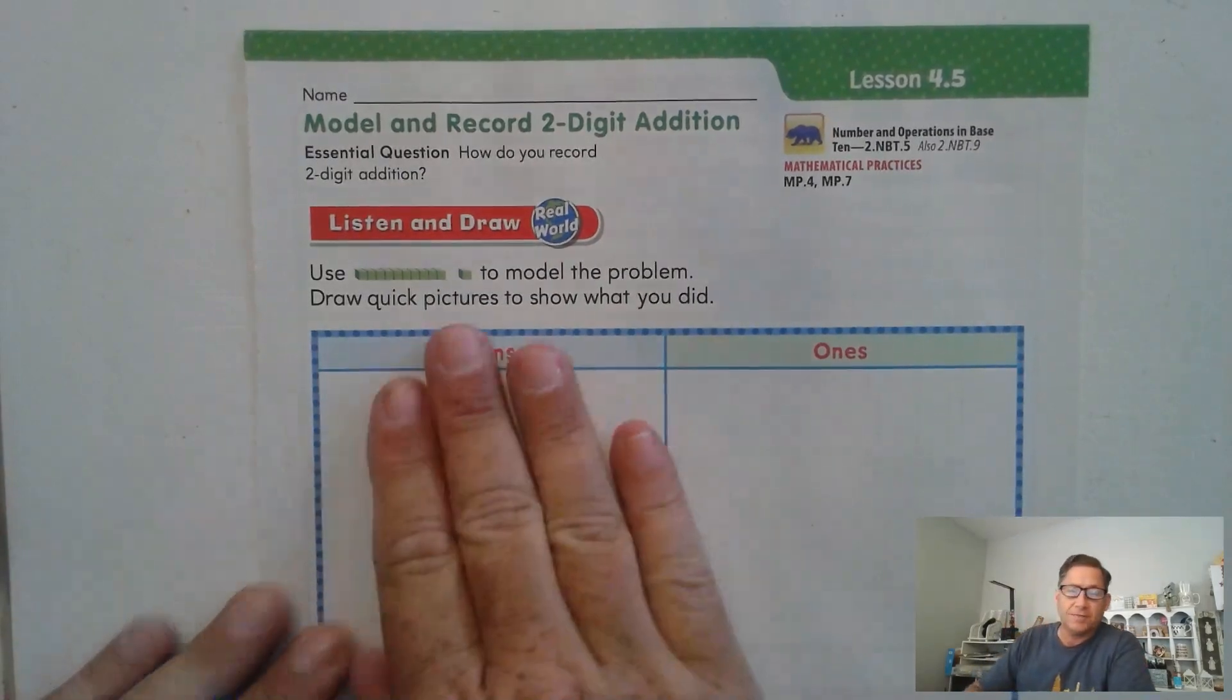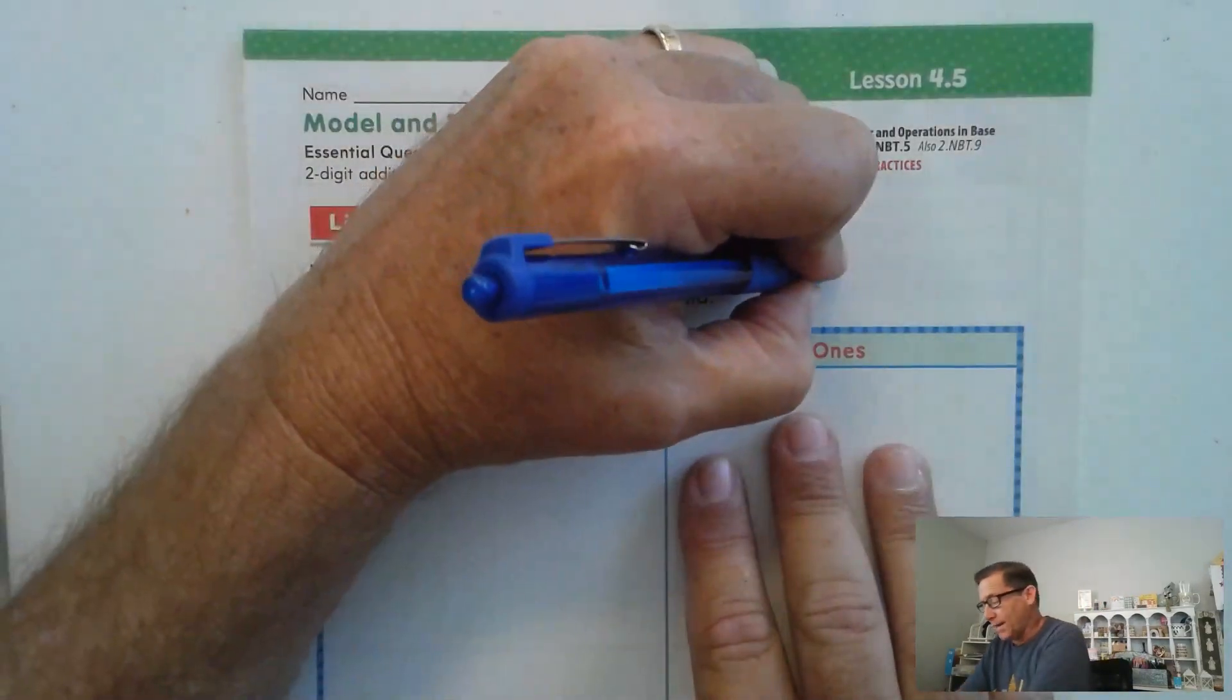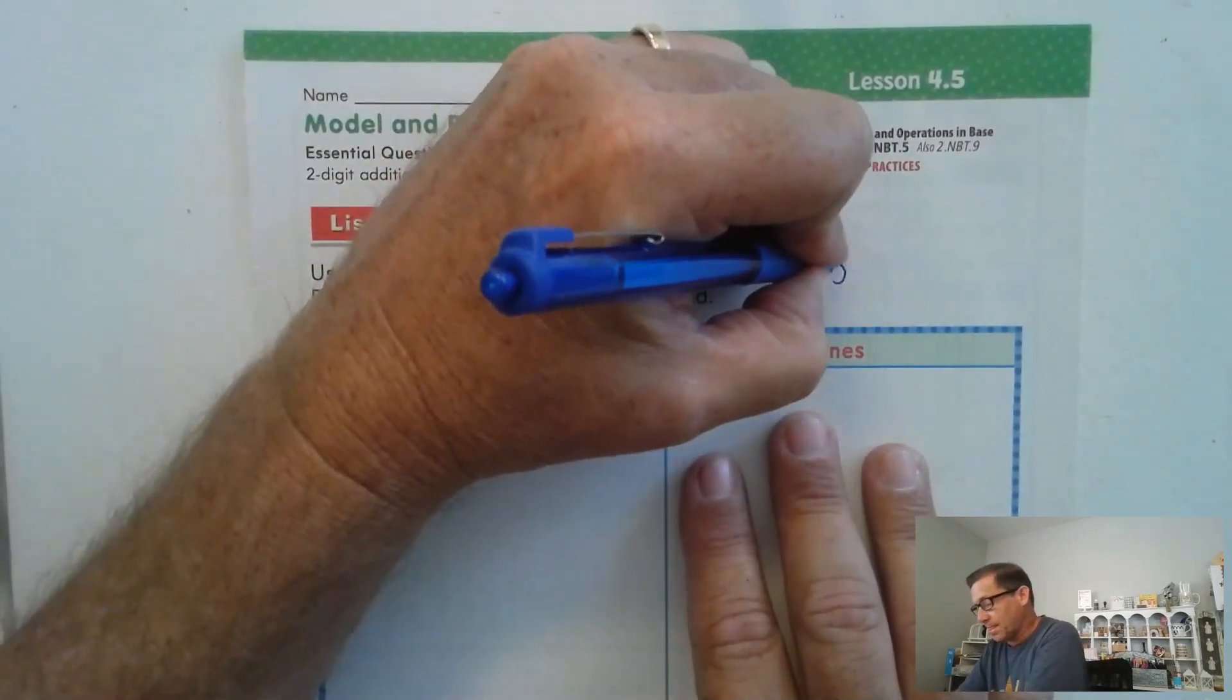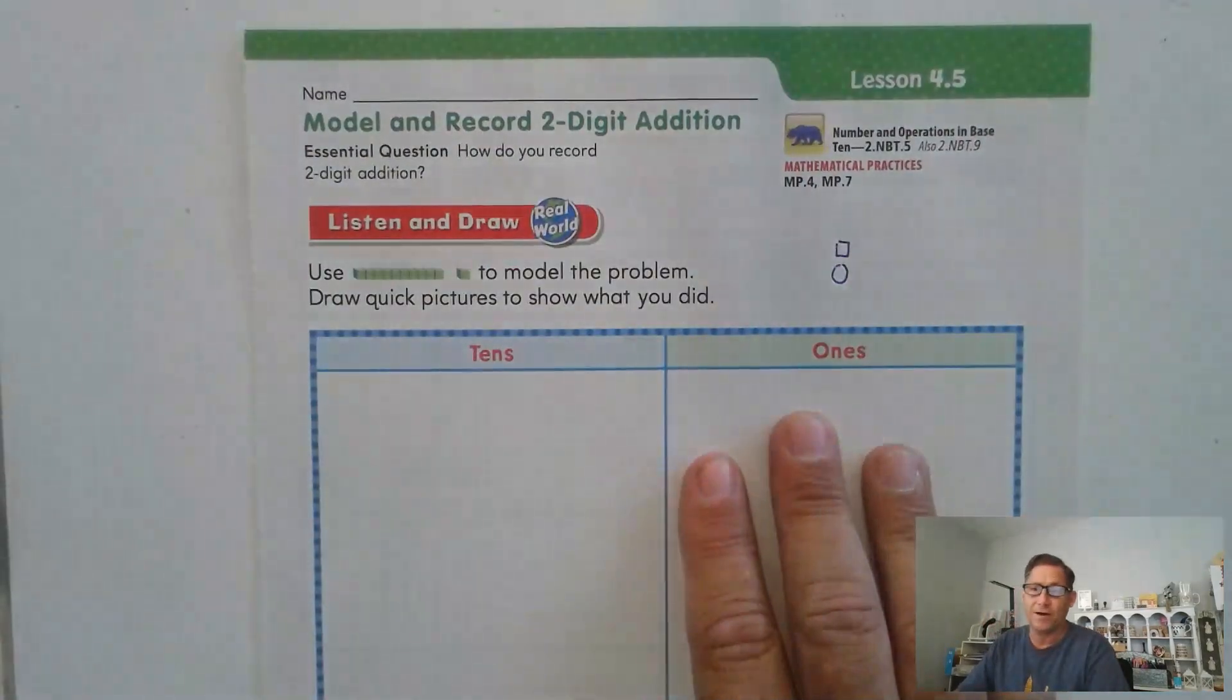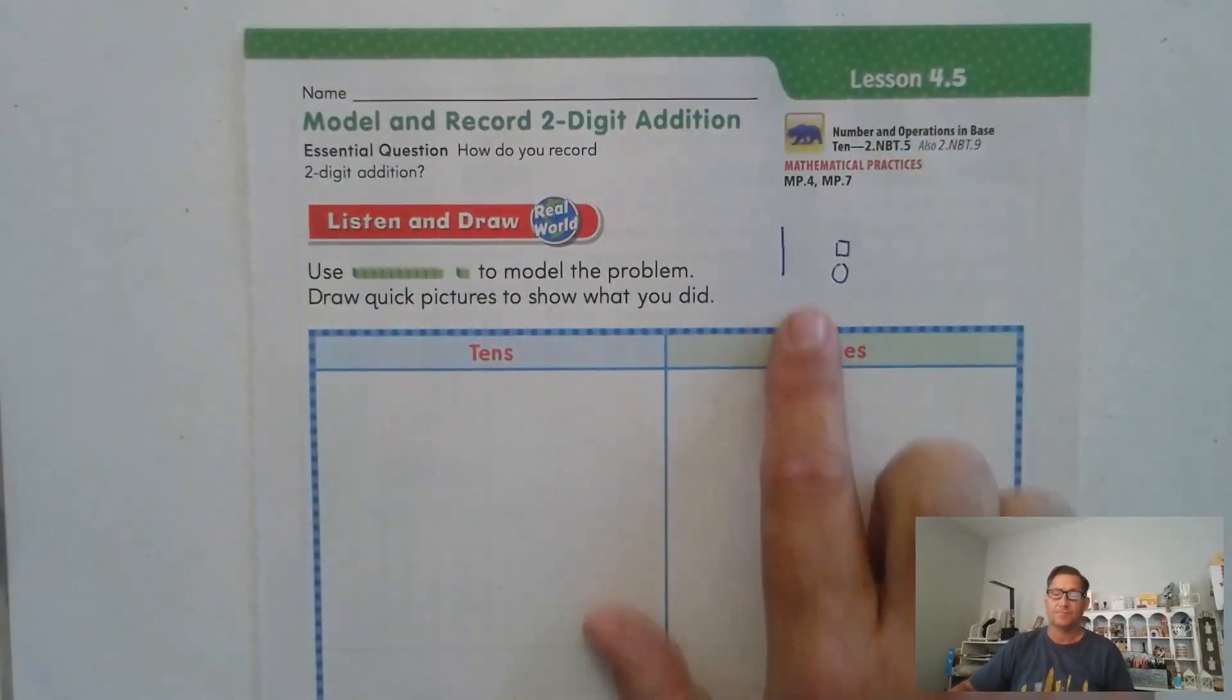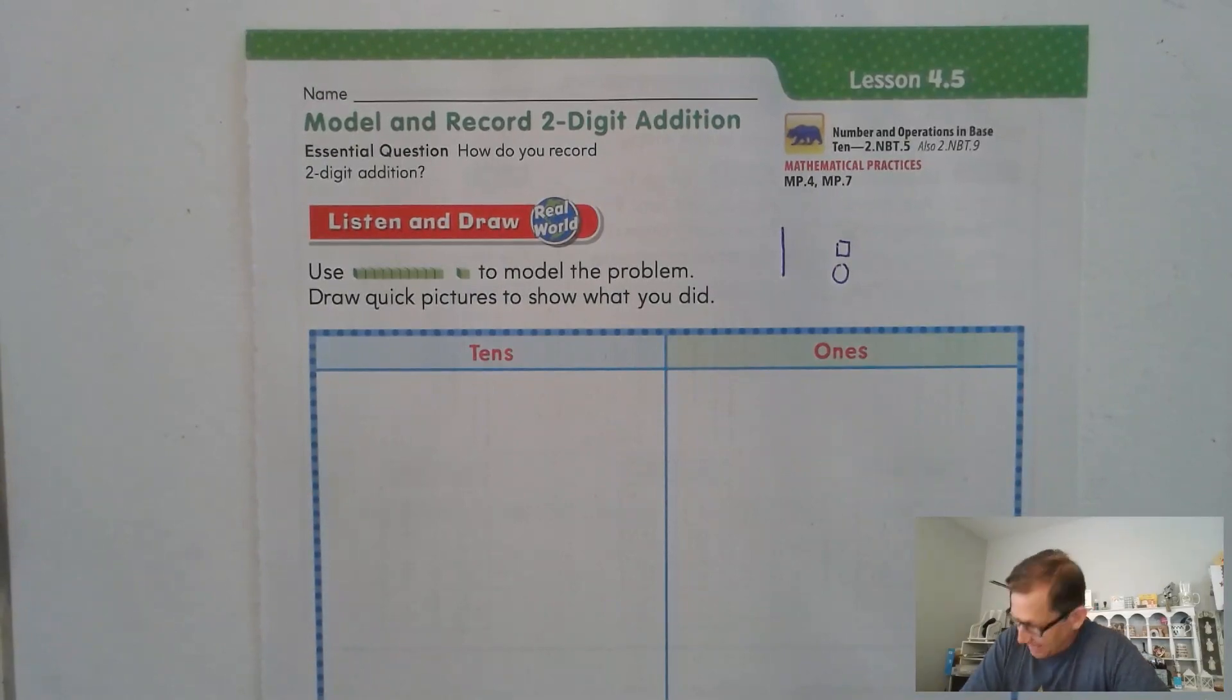I'm going to read you a problem, and I want you to draw a quick picture to represent the addition problem. I do want you to note that we have tens on this side and ones on this side. Remember that when we draw one in our quick pictures, it's either a circle or you can use a square. A 10 is represented as a straight line. Here's the problem. Mr. Riley's class collected 54 cans for the food drive. Ms. Bright's class collected 35 cans. How many cans did the two classes collect?